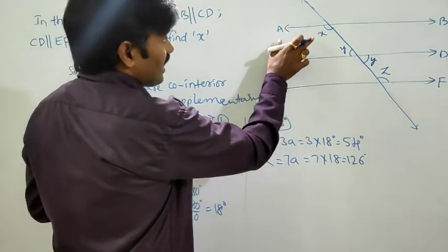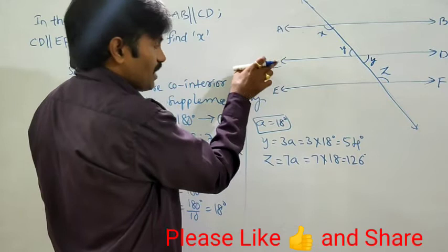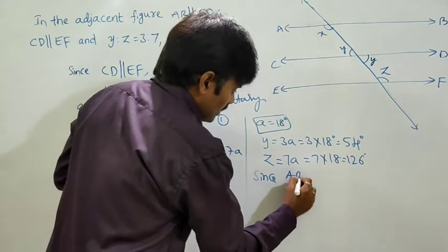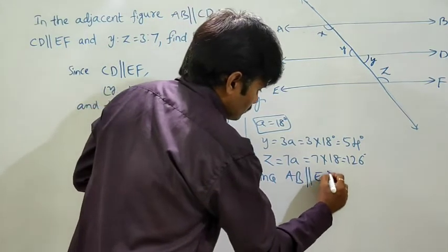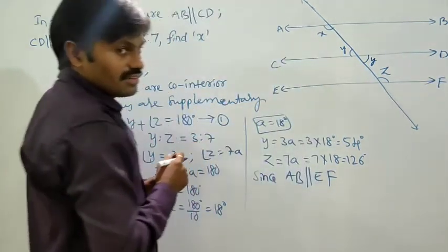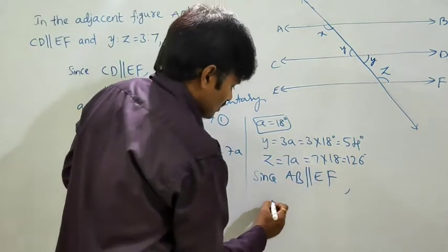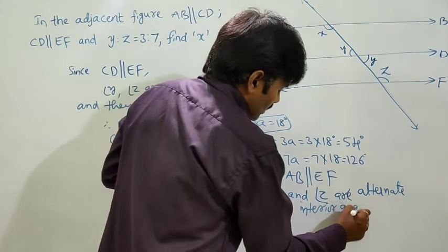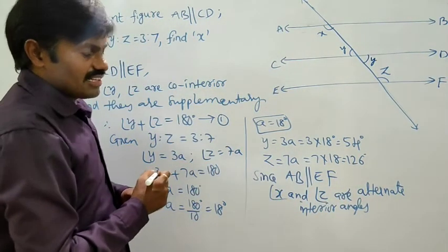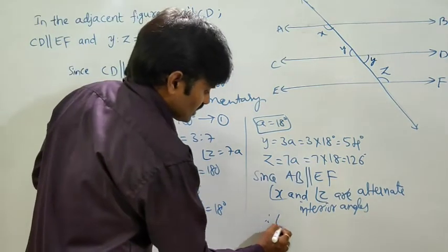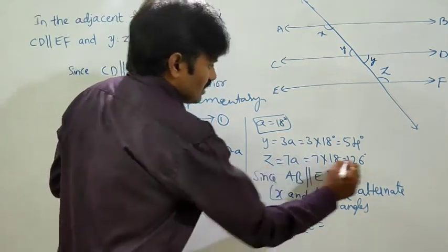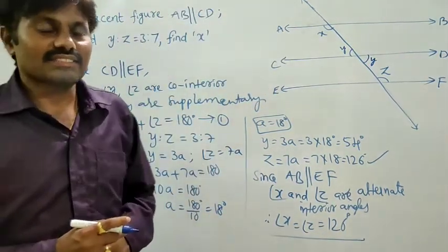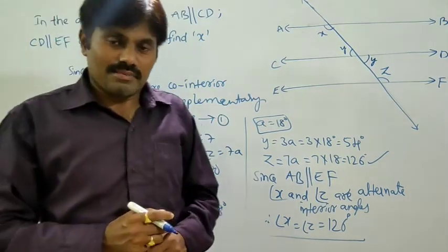But they asked us to find angle X. Here AB is parallel to CD, EF also parallel to CD, so AB is parallel to EF. Since AB is parallel to EF, X and Z are alternate interior angles. As per concept of alternate interior angles, they are equal. So angle X is equal to angle Z, which is 126 degrees. So finally the value of angle X is 126 degrees. Is it clear students?